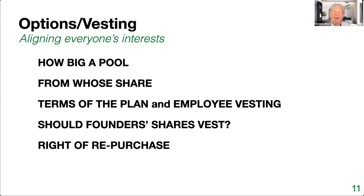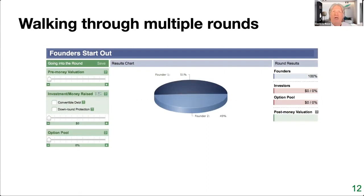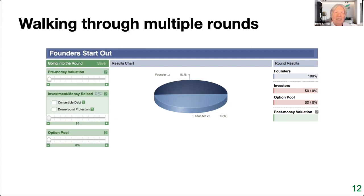Putting all that together, let's look at how this works. These illustrations are from a great site called ownyourventure.com — a wonderful free online visual calculator where you can play around and see what different scenarios look like. We'll start with a very basic, simple round. Two co-founders: you start out on day one each owning half the company. But a 50-50 split is not a good idea, because then you can get into absolute stasis if you can't agree — somebody has to have that extra 1%. So typically there will be a lead founder: say one person has 51% and the other has 49%.